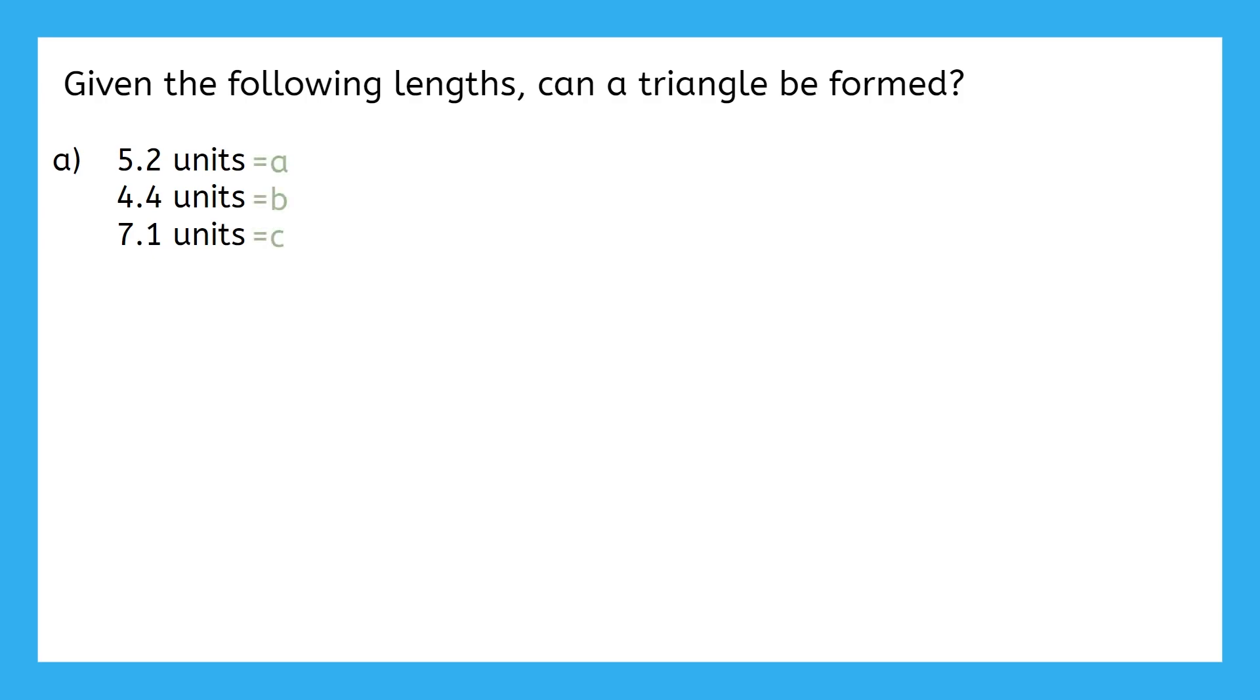Did you use 5.2 as A, 4.4 as B, and 7.1 as C and make the same three inequalities we just saw a moment ago? Or did you just make every combination you could by adding two sides and setting it greater than the third side?